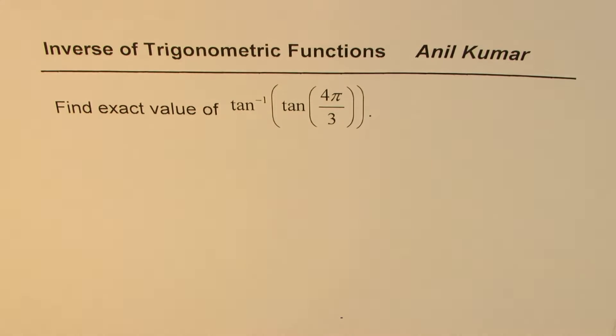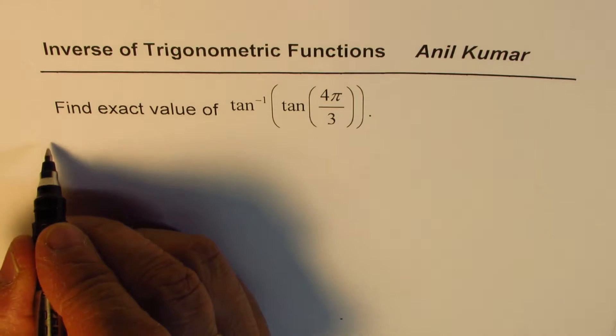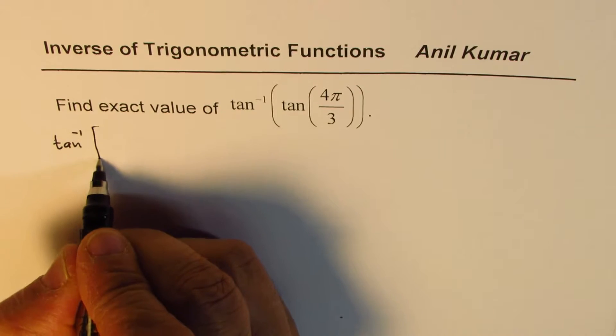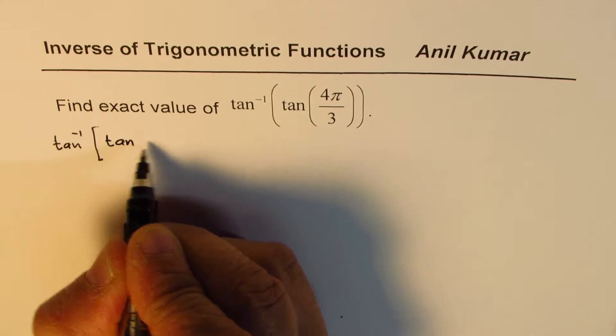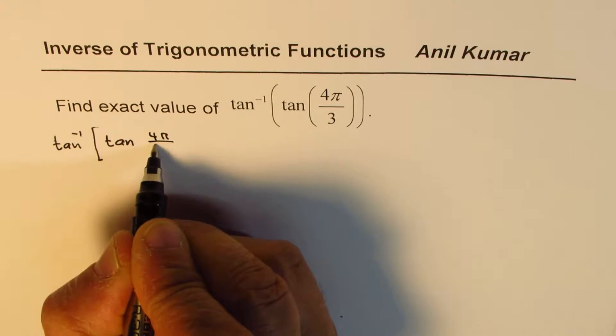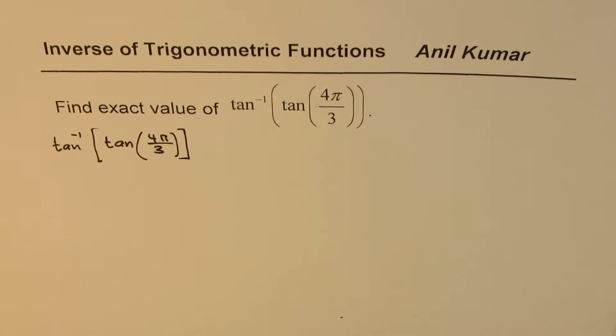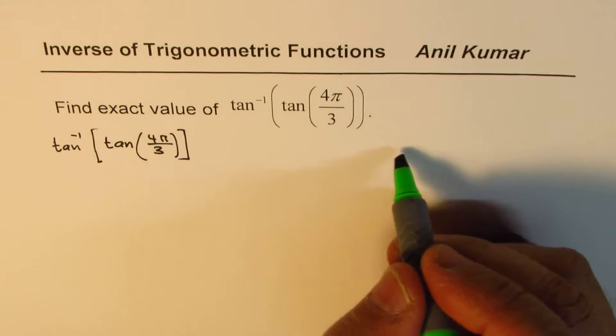Let me rewrite the question first. It is tan inverse of tan 4π by 3. Now what is 4π by 3? Let's calculate the inside function value.